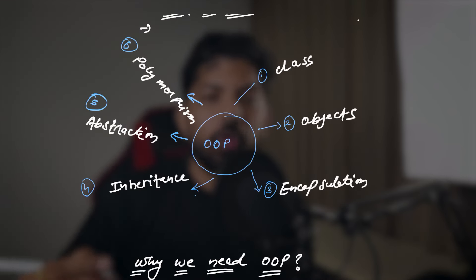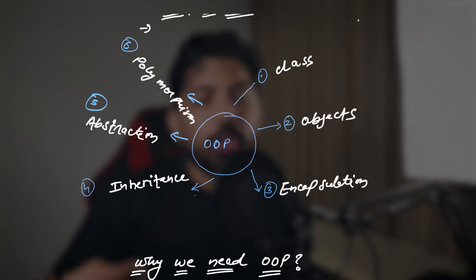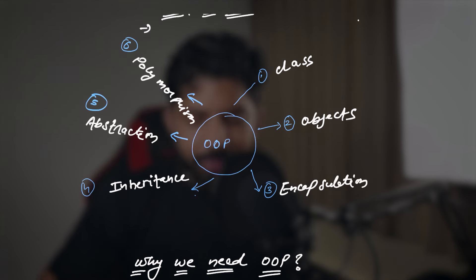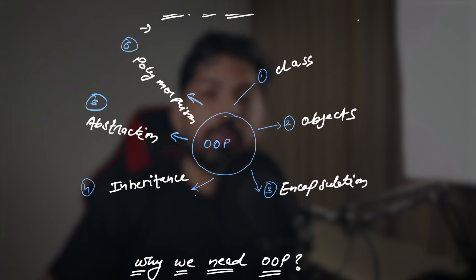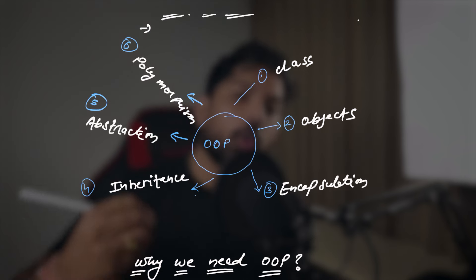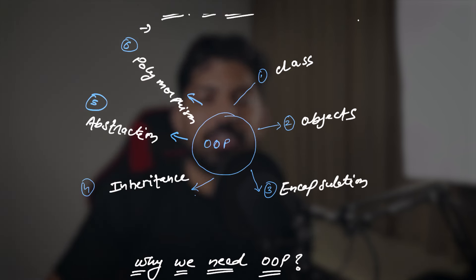First we will understand the theory of these concepts — class, objects, encapsulation, inheritance, abstraction, and polymorphism — then we will move to the code. It will become so easy for us to understand.